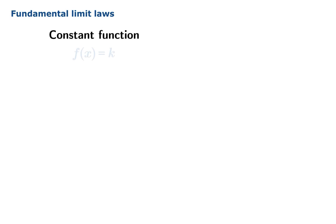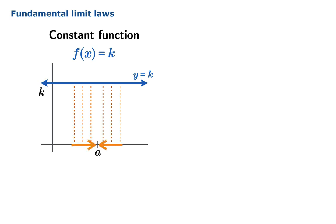The most basic kind of function you can have is a constant function, where the value is simply the same constant number k. The graph would be a horizontal line. All function values are equal to k. So it should come as no surprise that as an argument x approaches a, the function value, which is after all simply k, is going to approach k. And so our first limit law is limit as x approaches a of k is simply k.